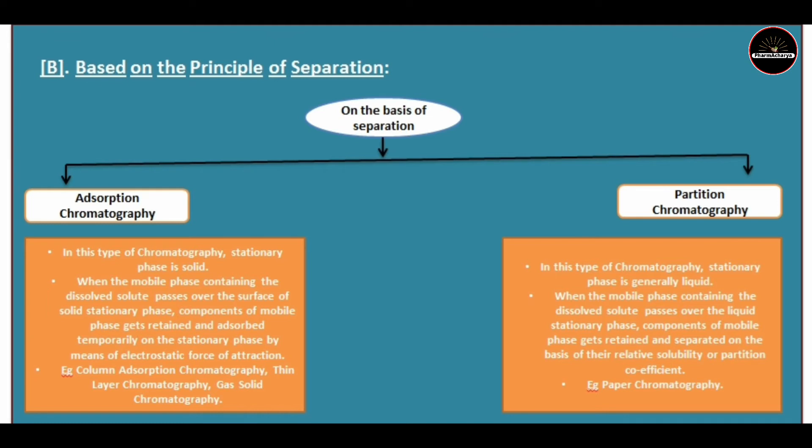In partition chromatography, the stationary phase is generally liquid. When the mobile phase containing the dissolved solute passes over the liquid stationary phase, components are separated on the basis of their relative solubility or partition coefficient. An example of this type is paper partition chromatography.